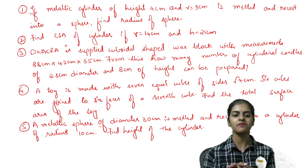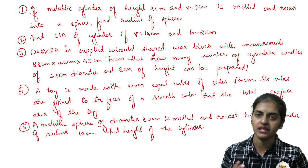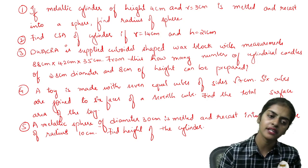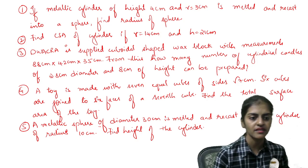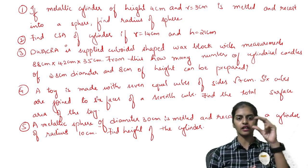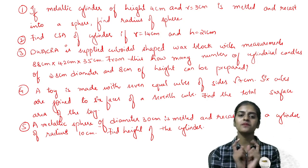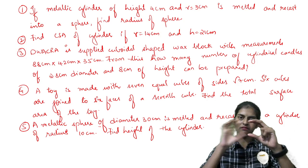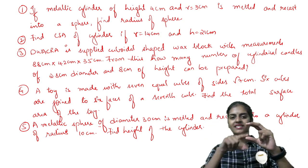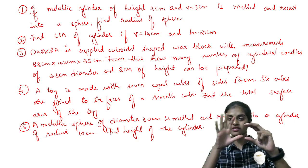Next model of question: A toy is made with seven equal cubes of sides root seven. Six cubes are joined to six faces of the seventh cube. Find the total surface area of the toy. So you have seven cubes, and each cube side is root seven centimeter. Now this cube has six faces - top, bottom, left, right, front and back. To these six faces, you are attaching six cubes. So one to the back, one to left, one to right, one to the front, top and bottom.